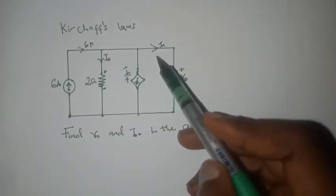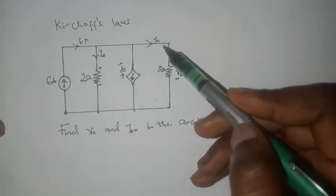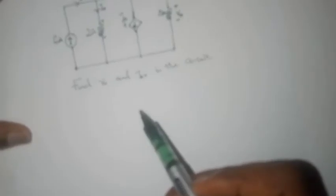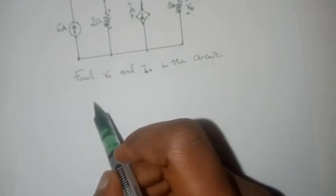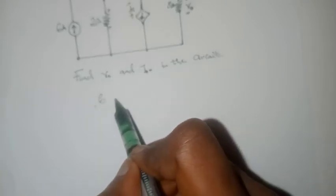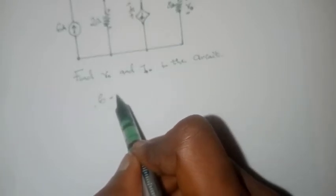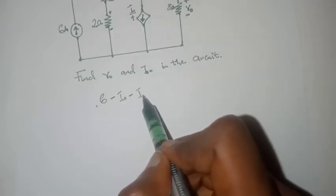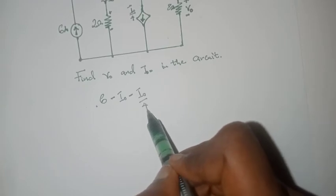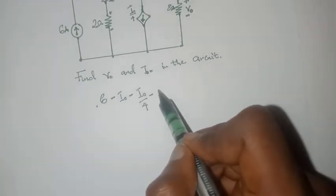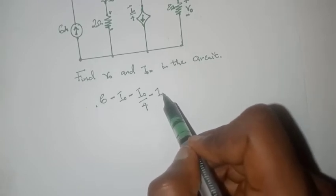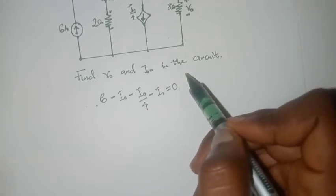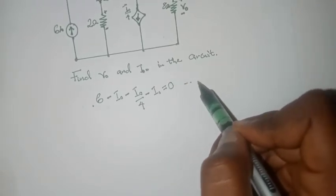This entire line is a single node. So we can write a Kirchhoff's current law around the node, which would give us 6 minus I0 minus I0 over 4 minus I1 equals 0. Now, that will give us our first equation.